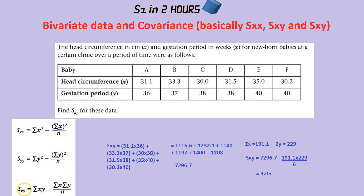Let's do the actual question they're asking — SXY. What does it mean? It means the sum of x times y. So in this case it would be 31.1 times 36, added to 33.3 times 37, added to this number times this number, and so on — you multiply each x by its corresponding y and add them all up. That's how you calculate the sum of x times y.